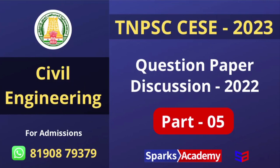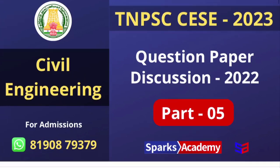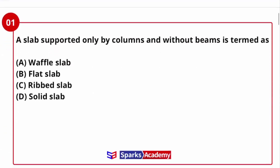This is part five and we are going to solve a few questions. The first question: a slab supported only by columns and without beams is termed as what? The usual load transfer mechanism is from slab to beam to column. But in this case, there is no beam — the slab goes directly to the column. You can see this in parking lots of apartments, for example. So the answer for this question is flat slab.